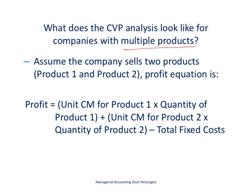Right now we'll focus on companies that have multiple tangible products, and later in this video we'll talk about companies that provide services. The profit equation is where we're going to start, and let's assume here we're talking about a company that has two products — product one and product two. This profit equation shows us how to find the profit for a company that has multiple products, in this case two products.